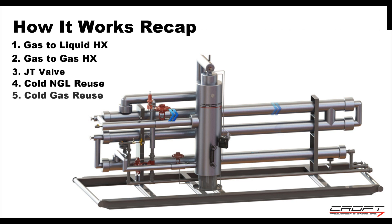The lean gas that is separated in the cold separator is then sent to the gas-to-gas heat exchanger where it cools the incoming rich gas from the system. The gas then leaves the unit.